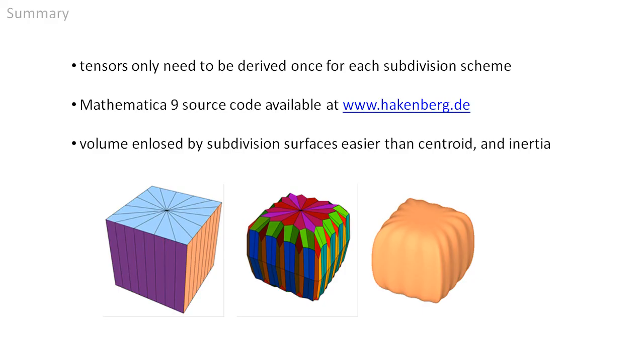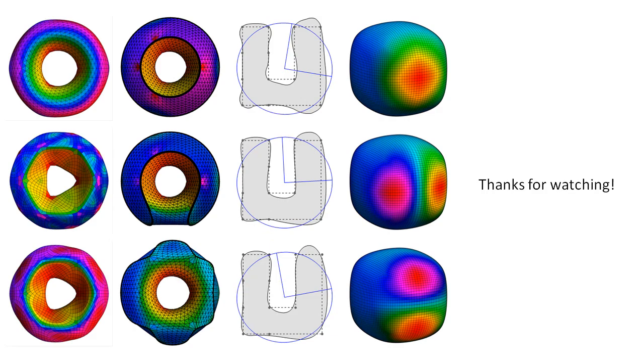Once the tensors are derived, the moment formula is universal for our closed, orientable meshes. Our source code is available online. We also remarked that the moment of degree zero, the volume, is much simpler to solve than centroid or inertia. For instance, we can compute the volume of a Catmull-Clark surface with vertices of valence up to 16 symbolically. Thank you for watching!